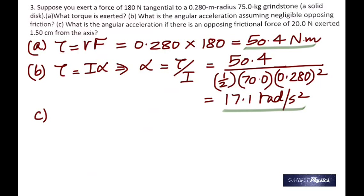In the C part, you are asked to find the angular acceleration again. But this time, you got to consider the friction. It's given as 20 newtons exerted 1.5 cm from the axis.